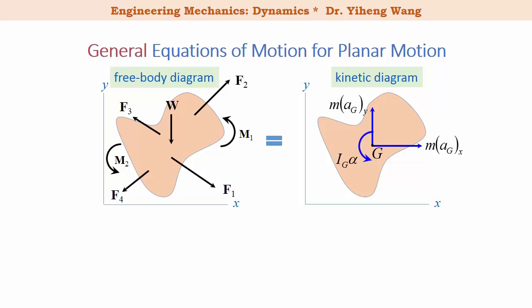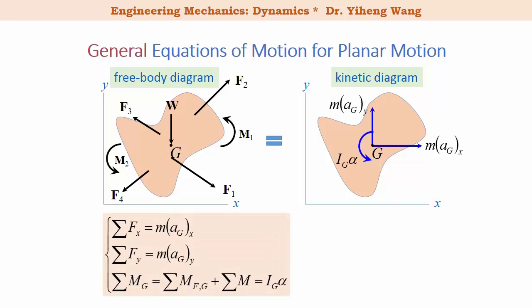Since we can summarize the resultant moment about any arbitrary point P, for convenience we can summarize it about the gravitational center G. The third equation then becomes: the resultant moment about G simply equals I_G·α, where I_G is the mass moment of inertia about an axis passing through the gravitational center G and perpendicular to the x-y plane.